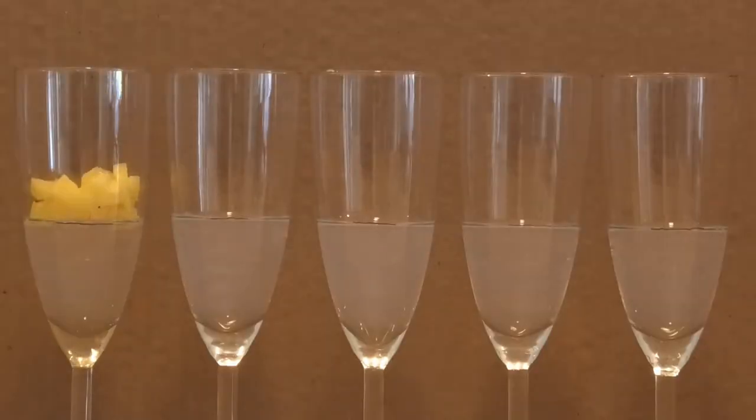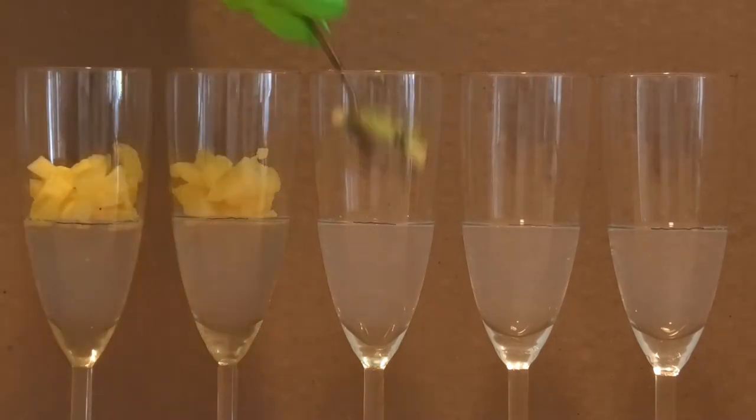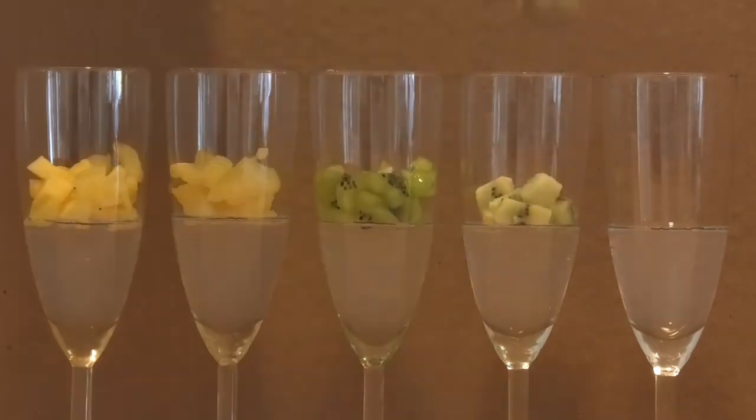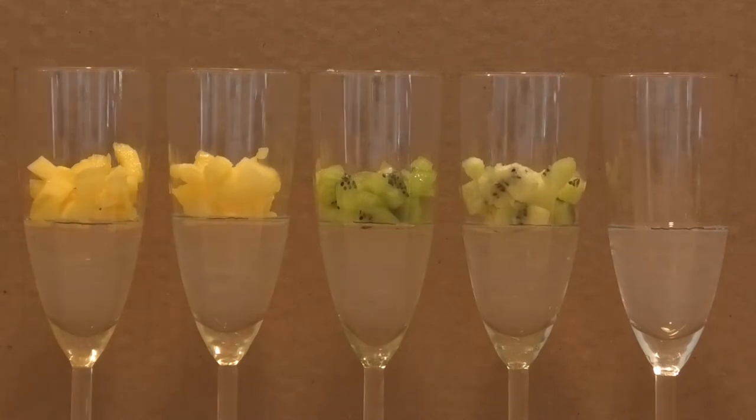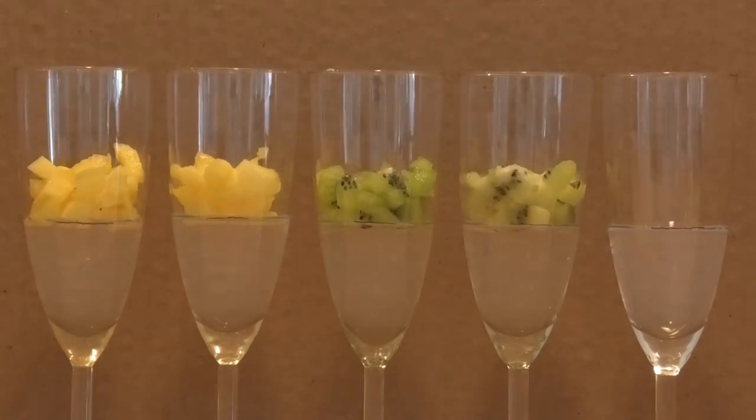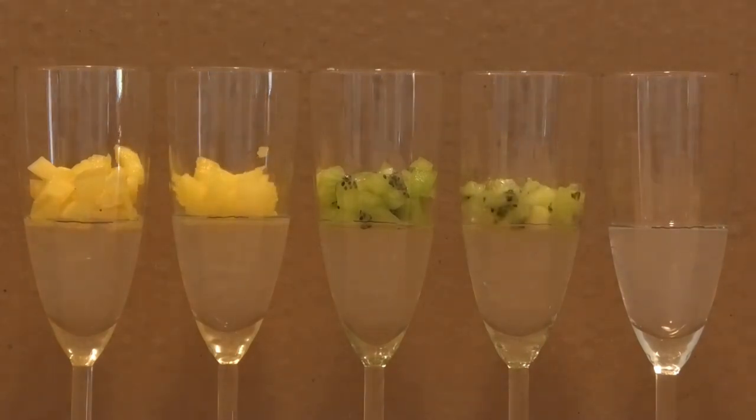Once your gelatin has solidified, you can start with the experiment. In this part, we're comparing if there's a difference between fresh pineapple and kiwi and the frozen versions. Make sure to add the same amount of fruit and mark the starting level of the gelatin. Carefully add the fruit into each glass. You can also include a glass without fruits. This will be your control that you will use to compare your experimental results with.